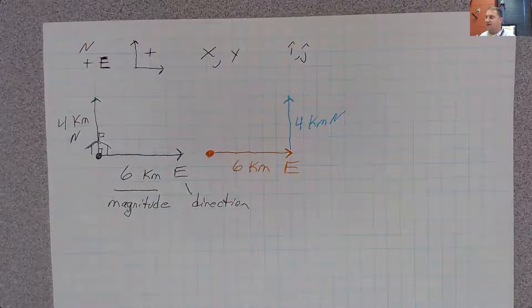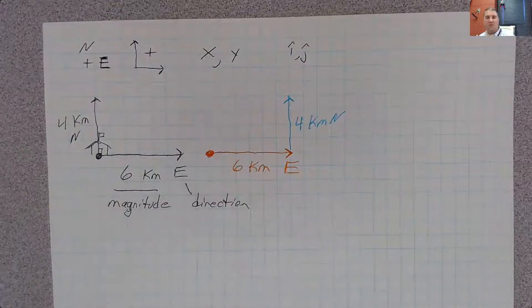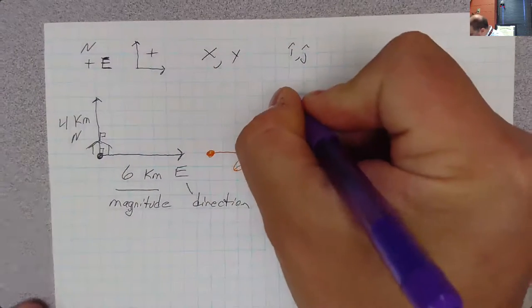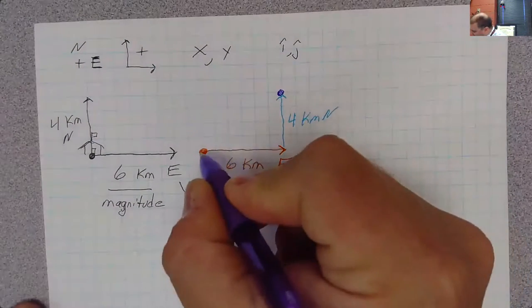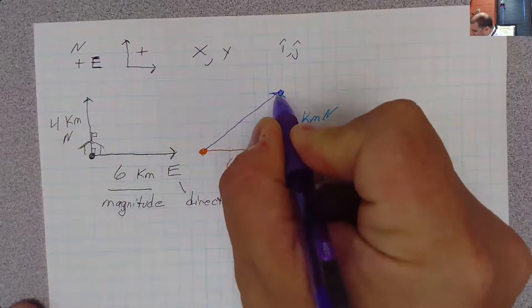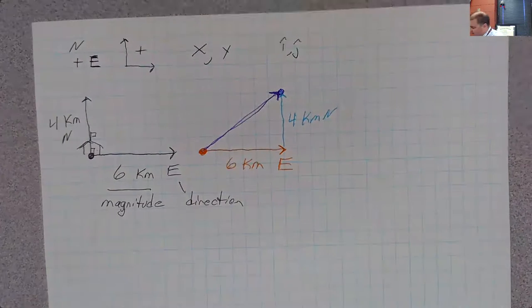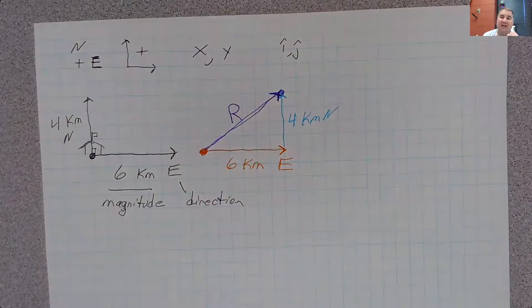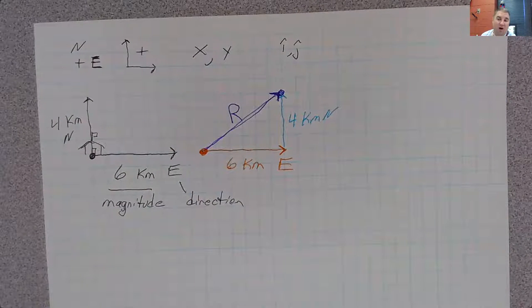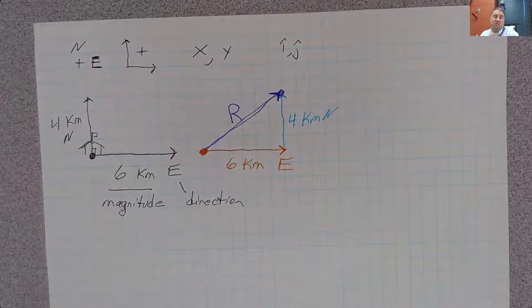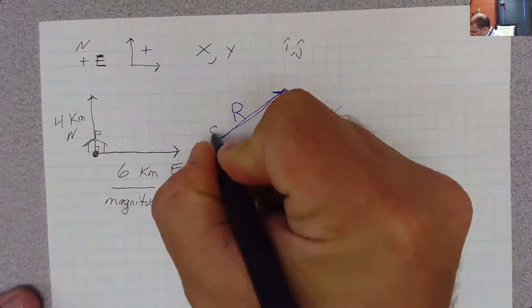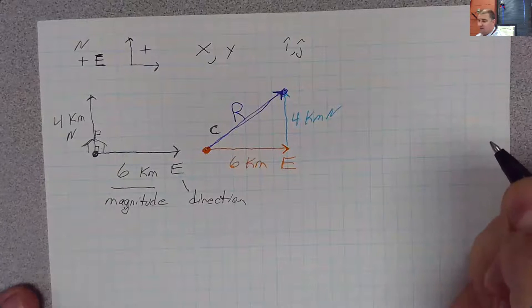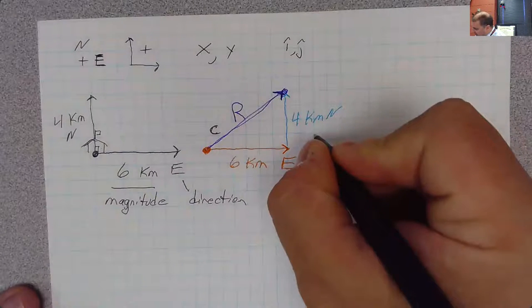And when we add those vectors, what do we get for the overall thing? Where have we ended up? Well, we've ended up here, and how far away would we be from the school then? What would we call that overall vector showing that displacement? Well, that would be the resultant, right? And so we'll often represent the resultant vector with an R. Now, in geometry, you might have called that the hypotenuse. In algebra, you should remember that often this is called C, and that these other parts of the triangle could be A and B.